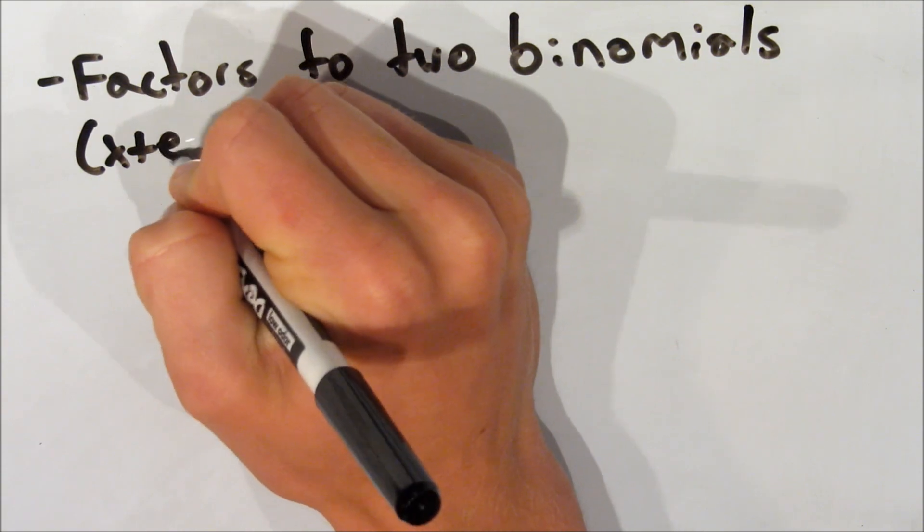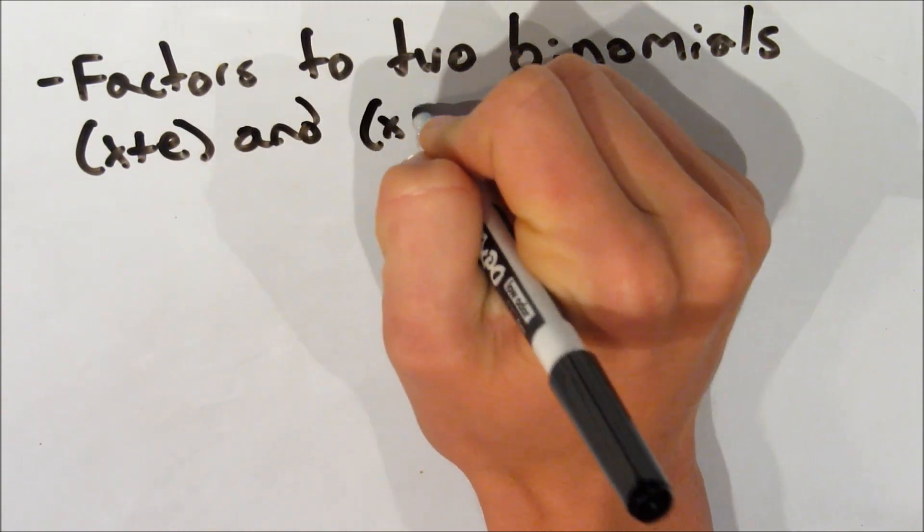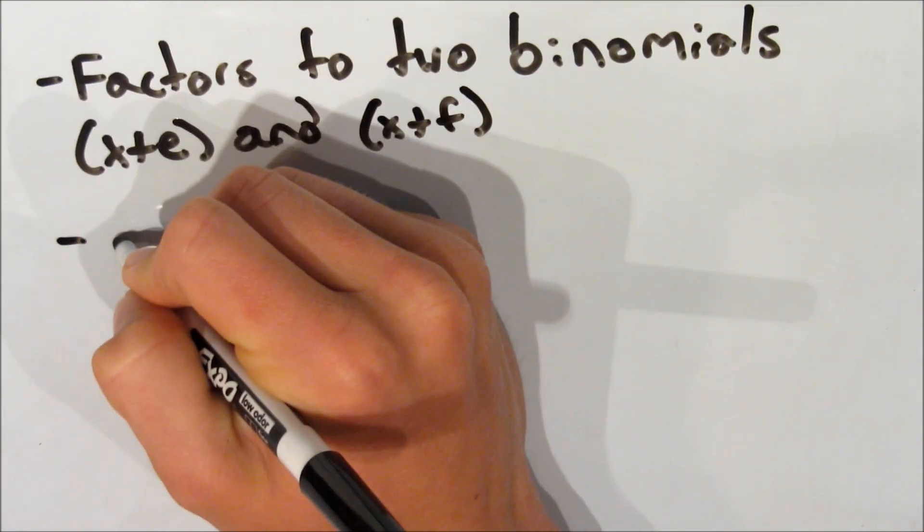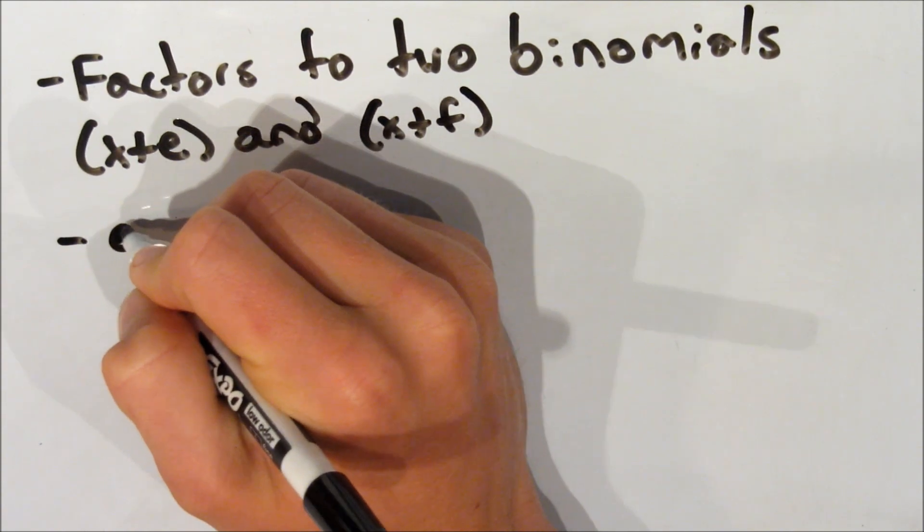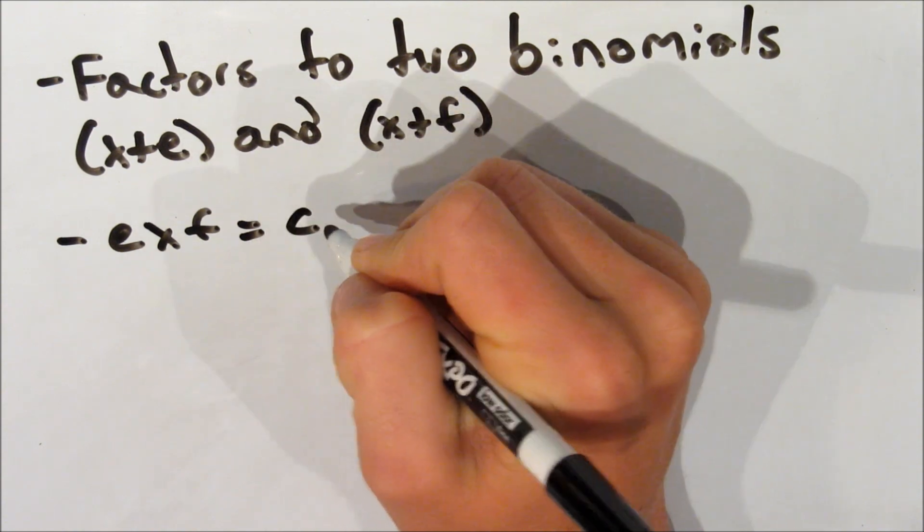Alright, so now let's get back to what we know about product sum factoring. We know it factors to two binomials. Let's just call them x plus e and x plus f in this case. So e and f would represent those constants at the end that I was talking about. So the numbers inside that are not x, basically.